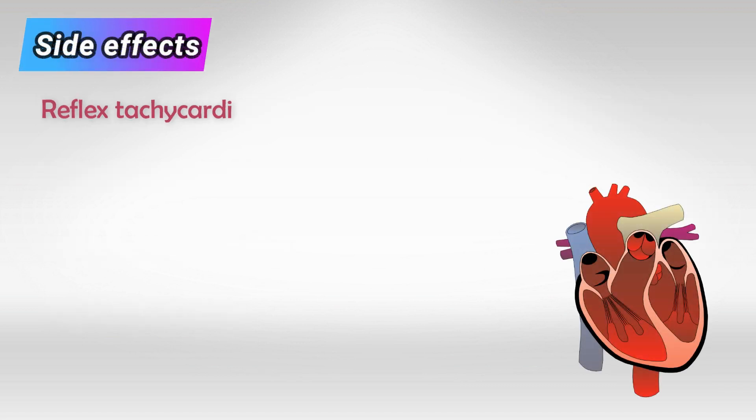Once the medication is taken, the arteries will dilate and the blood pressure will decrease drastically. As a result, the heart will compensate by pumping more. This is called reflex tachycardia. We can prevent this by taking beta blockers alongside hydralazine.